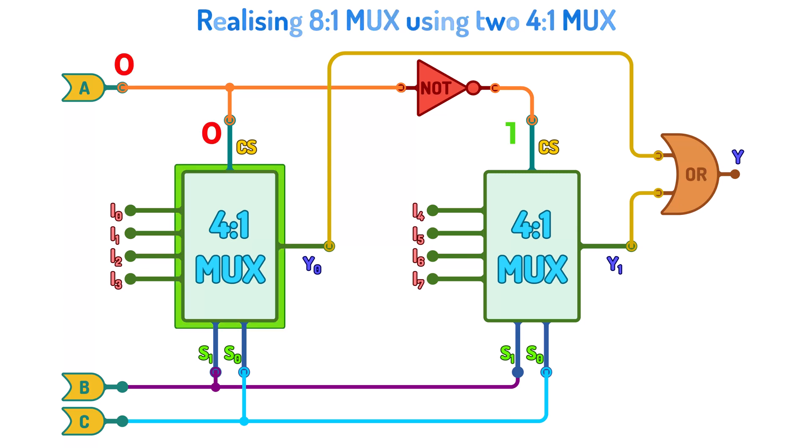So for all the values of A equal to 0, multiplexer 1 will be active, and for all the values of A equal to 1, multiplexer 2 will be active.